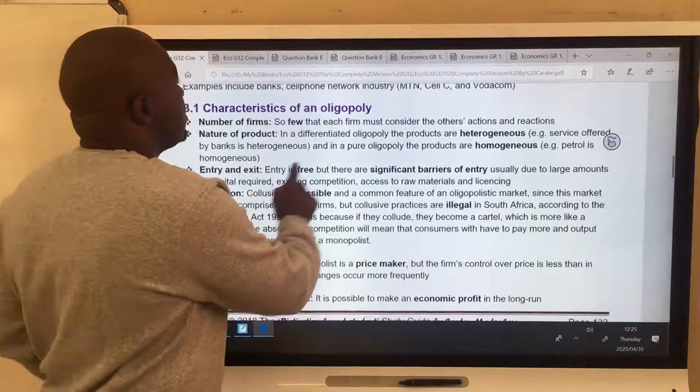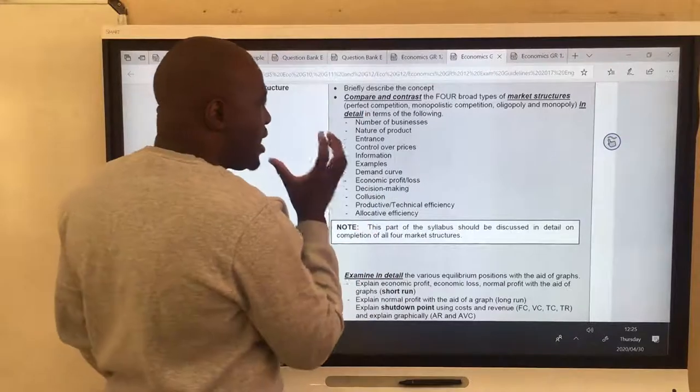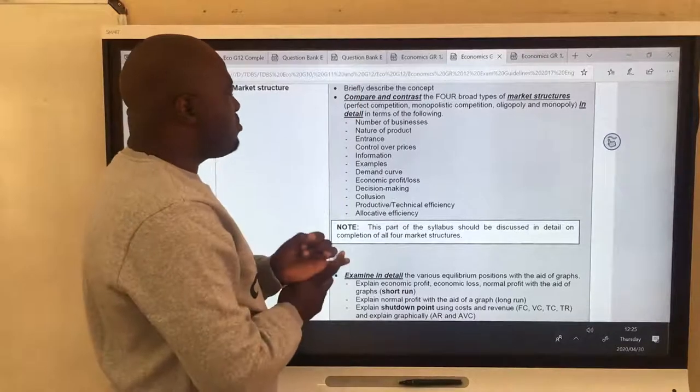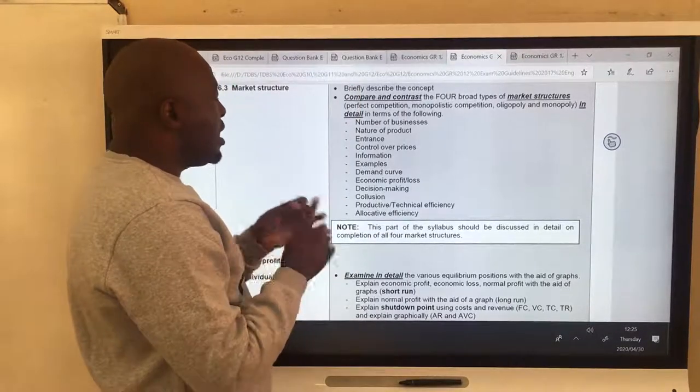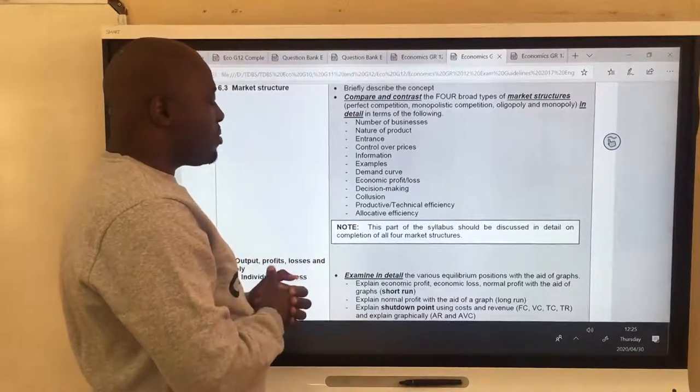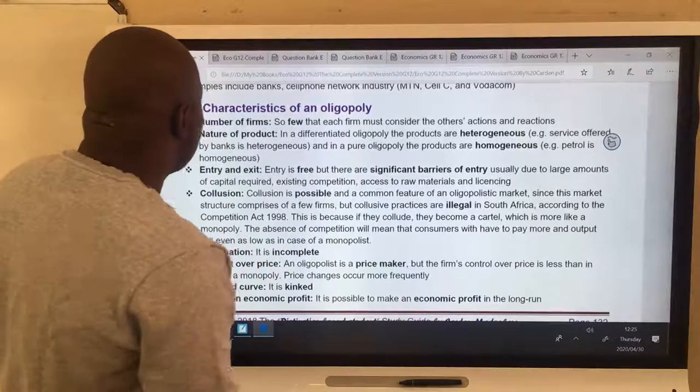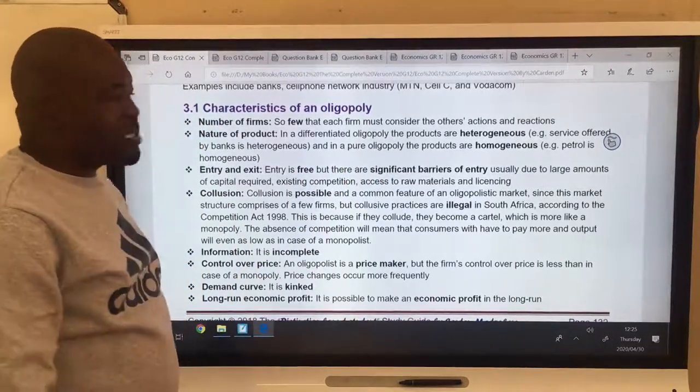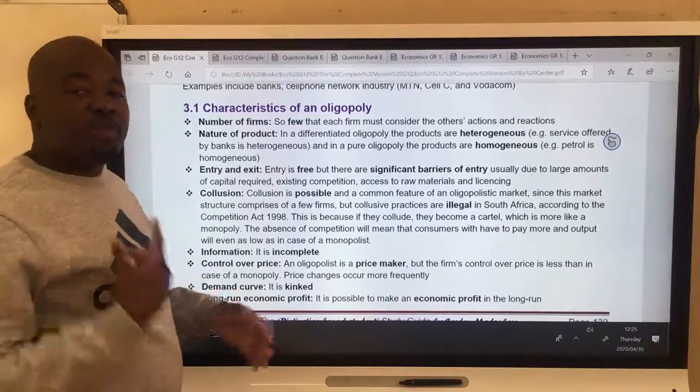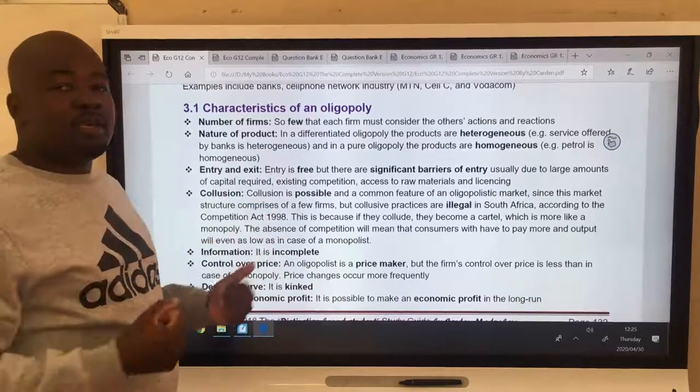So what are the characteristics? Now, these characteristics don't come from my head. I'm going to follow the examination guidelines. We want to see oligopoly in as far as the number of businesses is concerned. We've answered that already. Nature of product, entrance, control over price, information, examples, demand curve, economic profit, decision-making, collusion, productive and allocative efficiency. Let's see all the characteristics. Number one, number of firms. There are very, very few firms in this industry. Cell C, MTN, Vodacom, Telkom, FNB, ABSA, Standard Bank, Capitec, Nedbank, like that. You see, you can count them.